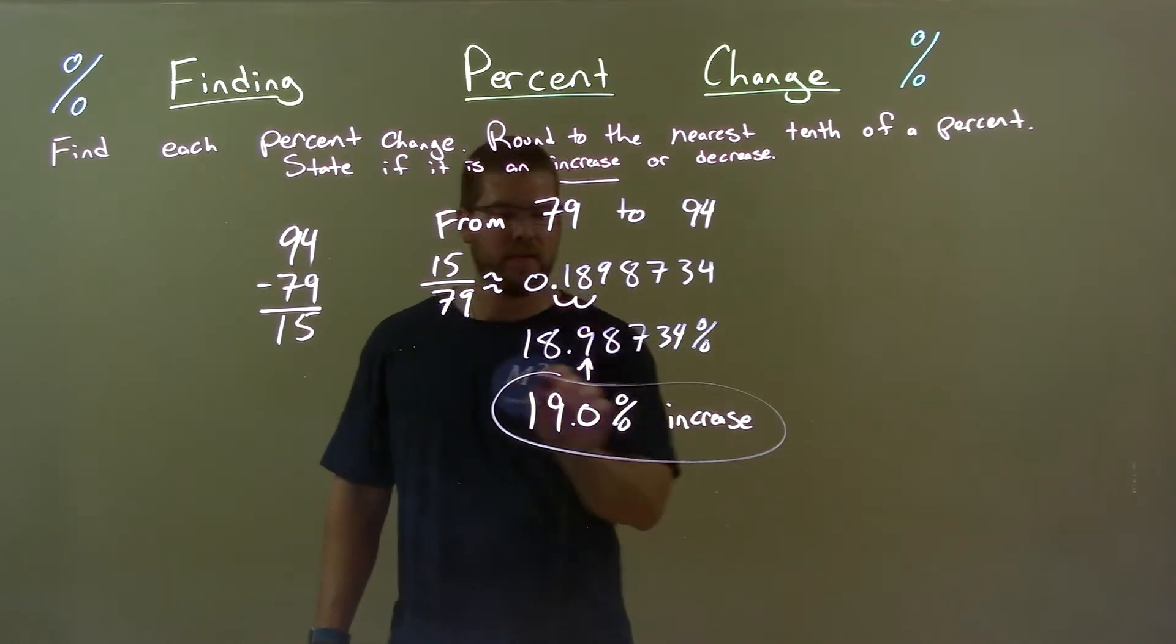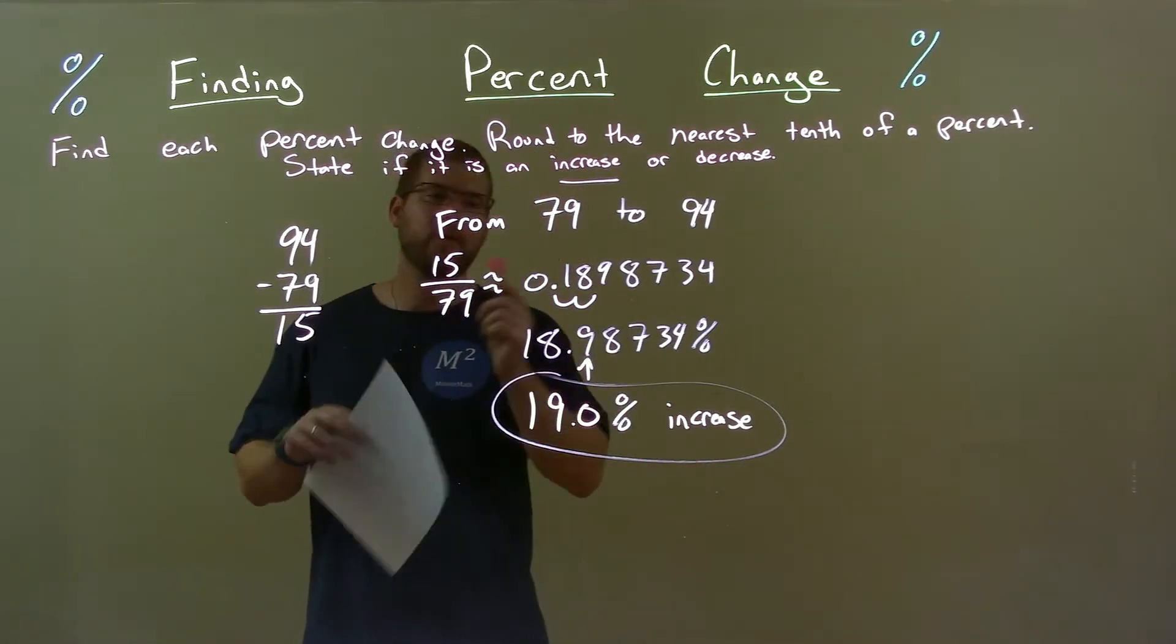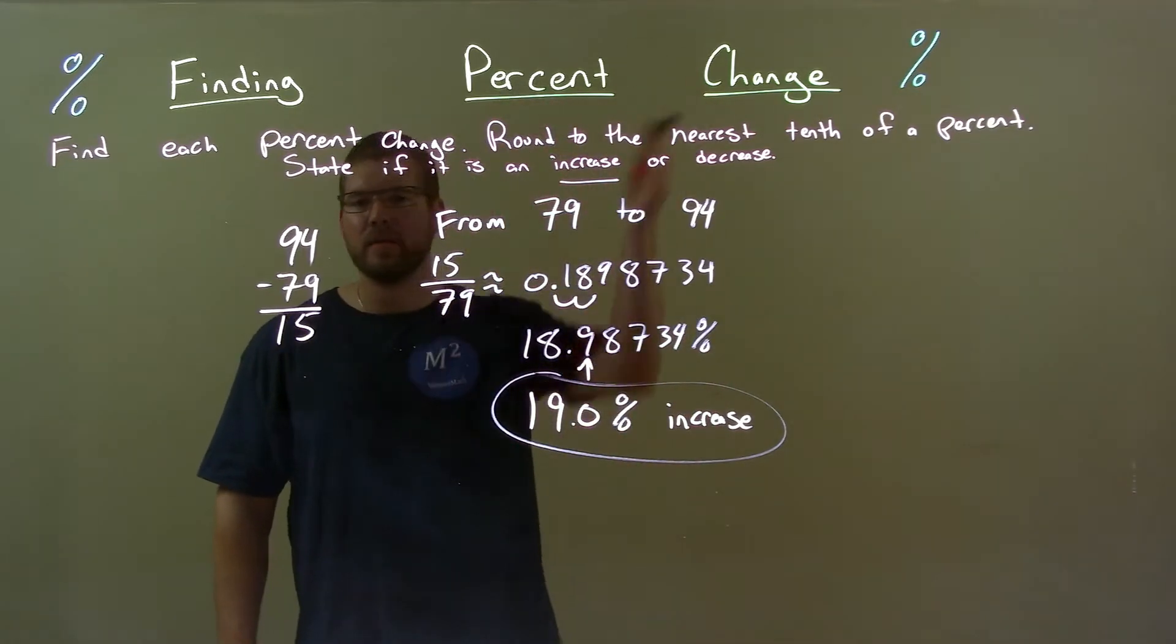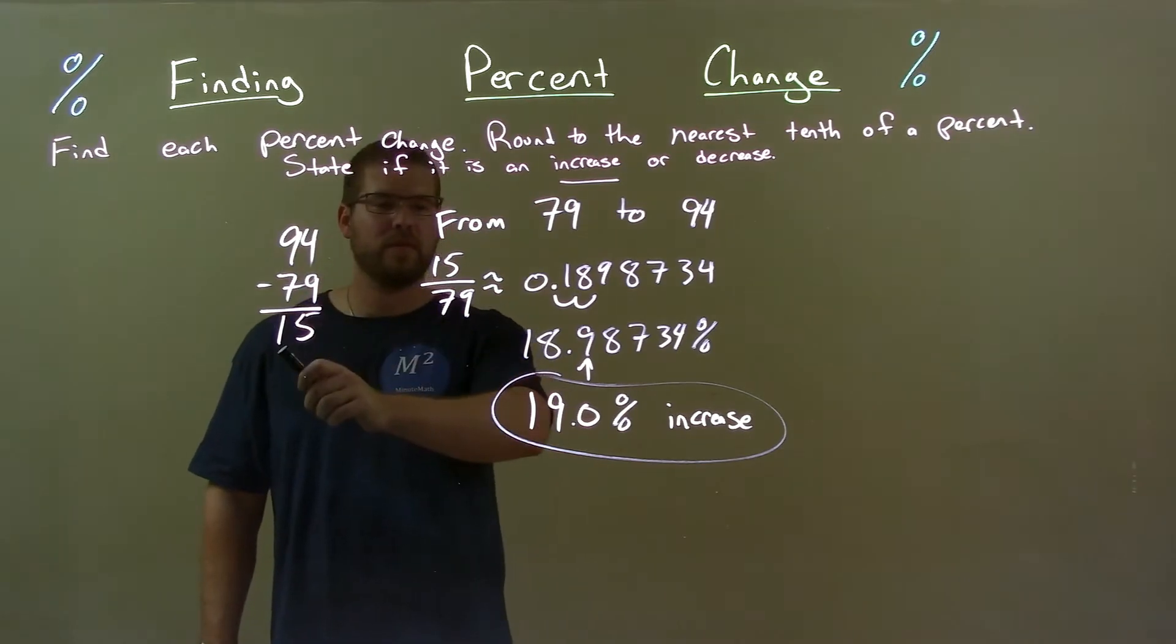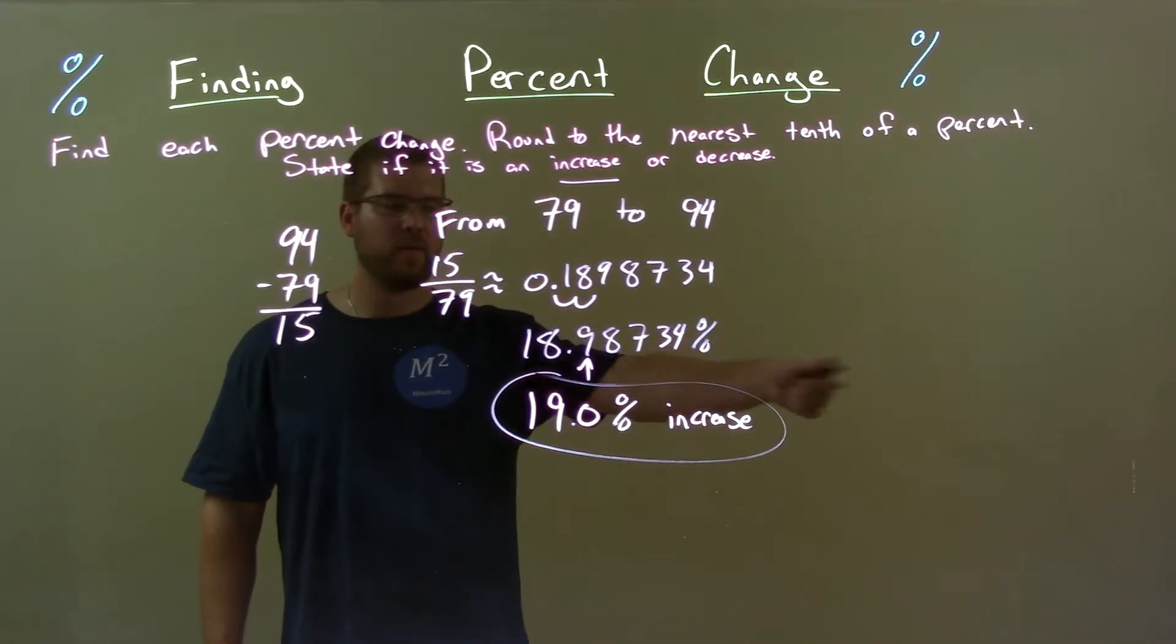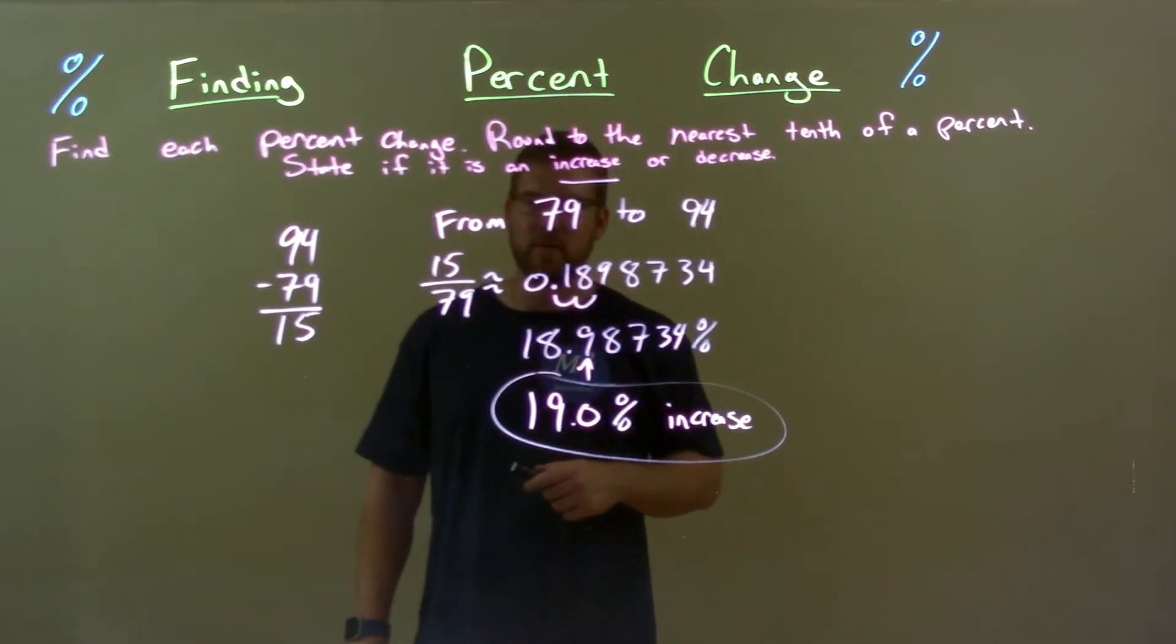And so our answer here is 19% increase. Quick recap. We're given from 79 to 94 and we find the percent change. Well that's an increase there. We found the difference between the two, divided that by the first number, converted that to a percent, rounded that to the nearest tenth, and got our final answer, 19% increase.